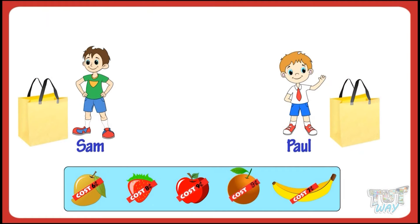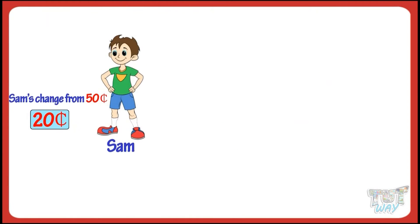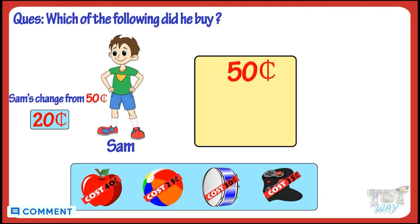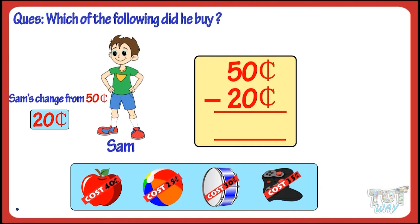Let's take another example. Here is Sam's change with 50 cents. Which of the following did he buy? Let me help you find it out. Sam had 50 cents and his change now is 20 cents. So first calculate what he spent by subtracting the smaller amount from the bigger amount. So 50 cents minus 20 cents, we get 30 cents.